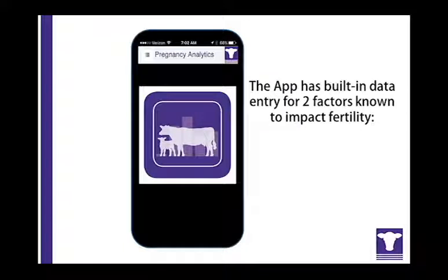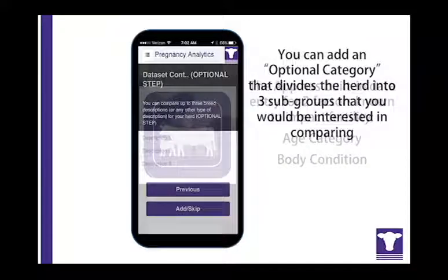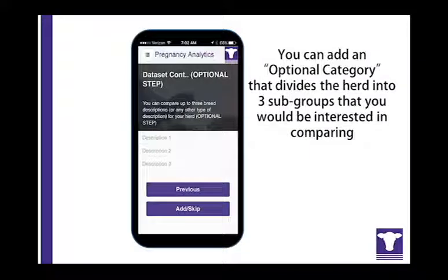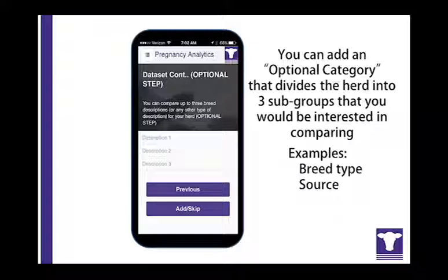The app has built-in data entry for two factors known to impact fertility: age category and body condition. Veterinarians and cattle producers know that other groupings of cows in the herd may be relevant, and being able to monitor reproductive differences by herd-specific subgroups would be valuable. For example, groupings of cows within a herd may have different genetic backgrounds, different sources, or some may be exposed to artificial insemination while others are only exposed for natural service.